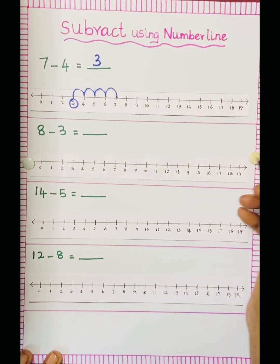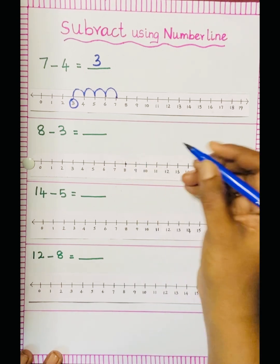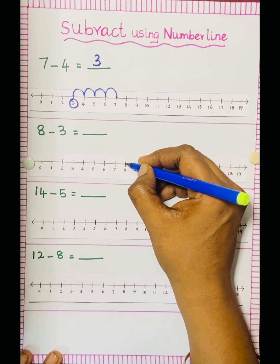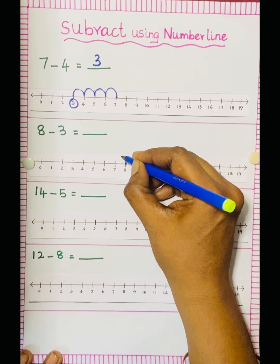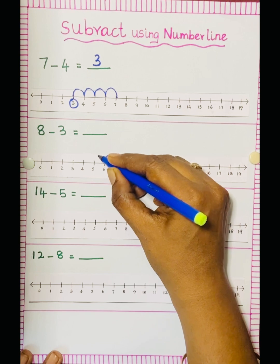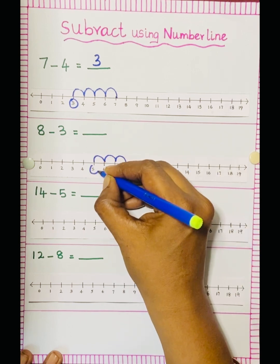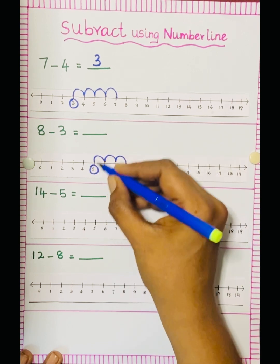8 minus 3. So keep the dot at 8, minus 3 means 3 jumps: 1, 2, 3. So the answer is 5.